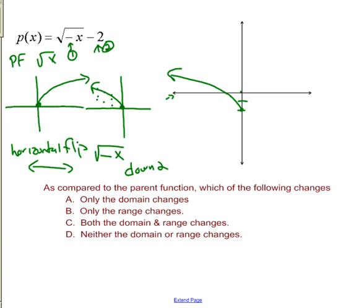Now let's think about what changed — domain, range, both, or neither. The original domain was zero and above, but that has definitely changed. On the original graph there were no negative x's, but over here it's all negative x's. The range was zero and above; now it's negative two and above. So in this case both things changed. We did a horizontal and a vertical transformation, and both actually changed the domain and the range.